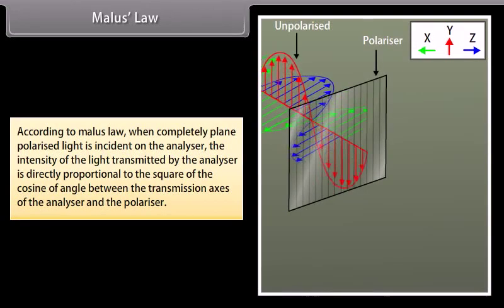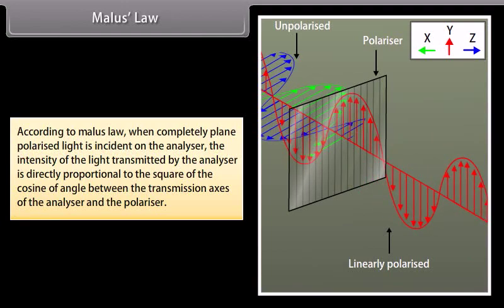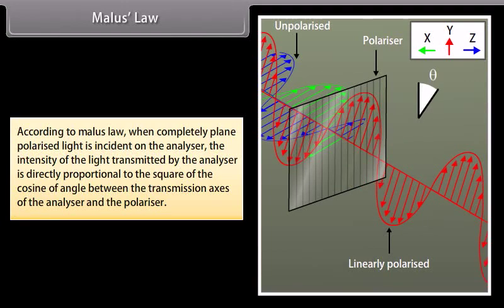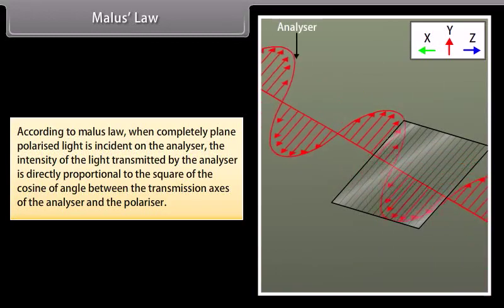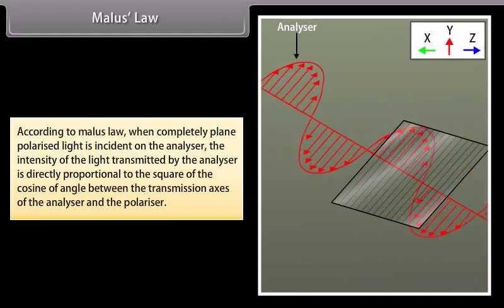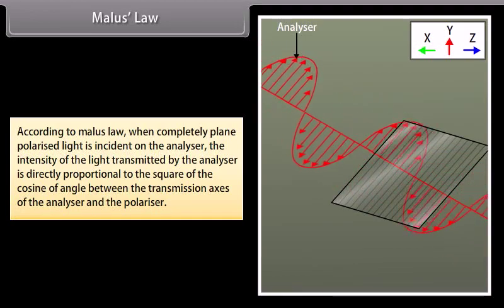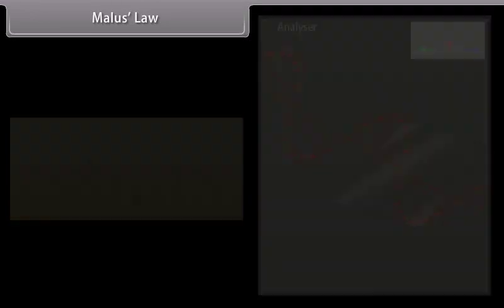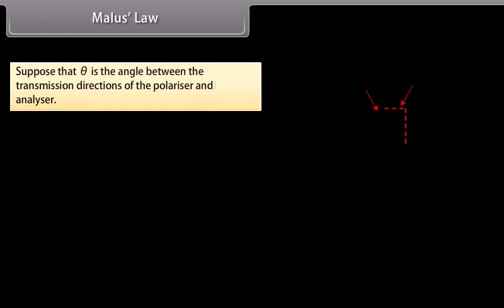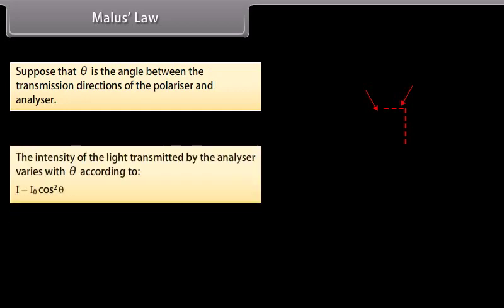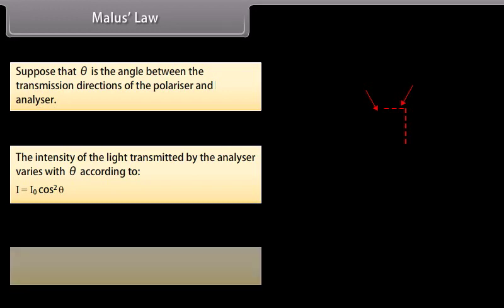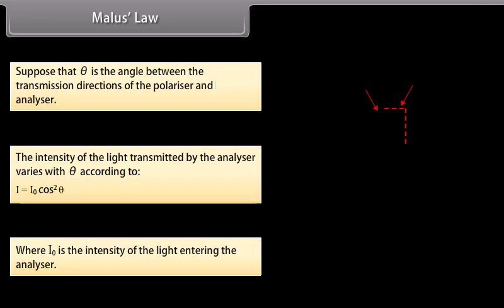Malus's Law: according to Malus's law, when completely plane polarized light is incident on the analyzer, the intensity of the light transmitted by the analyzer is directly proportional to the square of the cosine of the angle between the transmission axes of the analyzer and the polarizer. The intensity of the light transmitted by the analyzer varies with θ according to I = I₀ cos²θ, where I₀ is the intensity of the light entering the analyzer.